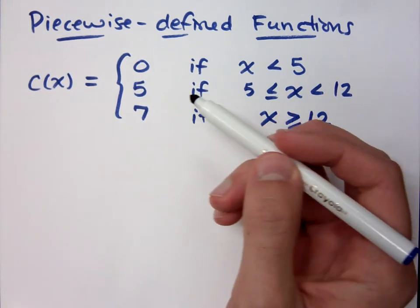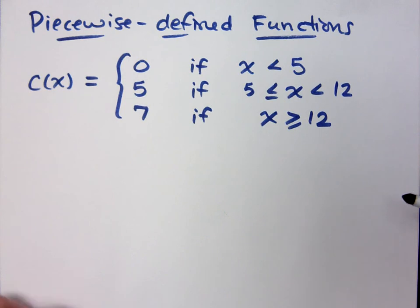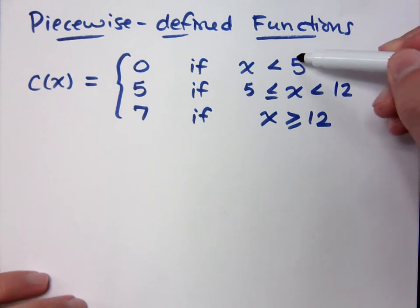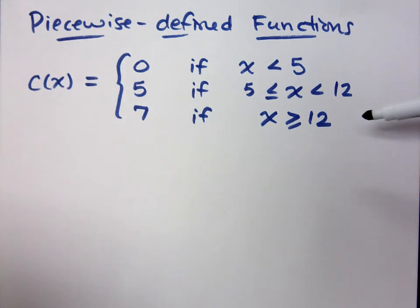But you understand that if you walk in, you don't pay two different prices, do you? You pay according to how this is set up. So when you look at the wall and it tells you those age restrictions and the prices, it's a piecewise-defined function.